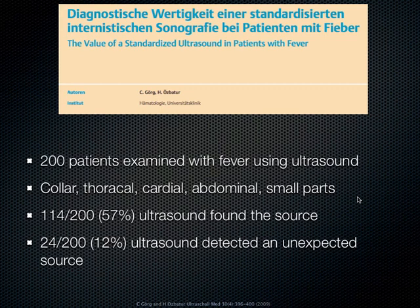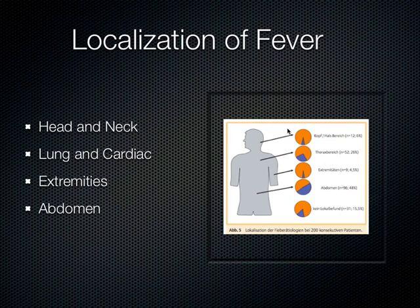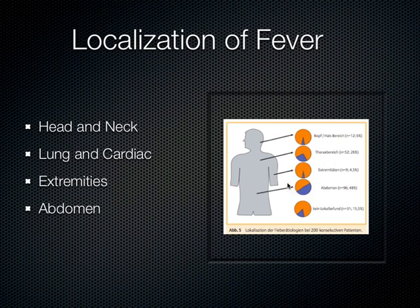To expand on this, here is a diagram from their article. It looks like you could go to the head or neck in about 12% of patients. They found evidence in 26% of patients in the chest or heart and lung. In the extremities, about 4.5% of patients. And then almost half the patients, they found the information in the abdomen. So we're going to go through the head and neck, the lung, cardiac, extremities, and abdomen searching for a fever — starting at the head.